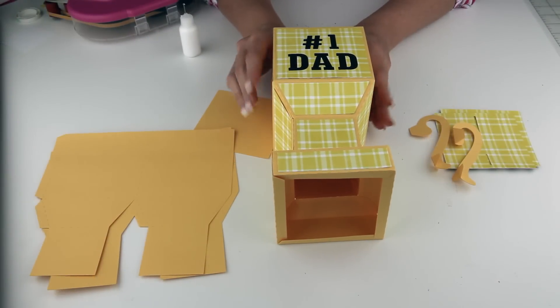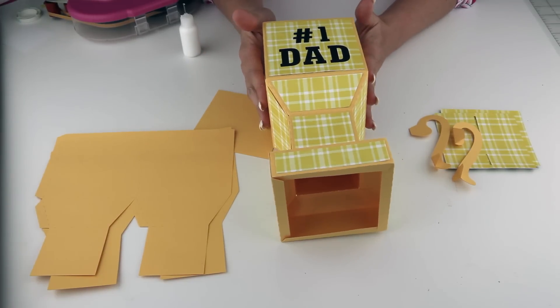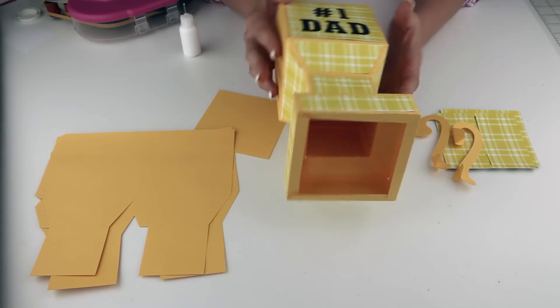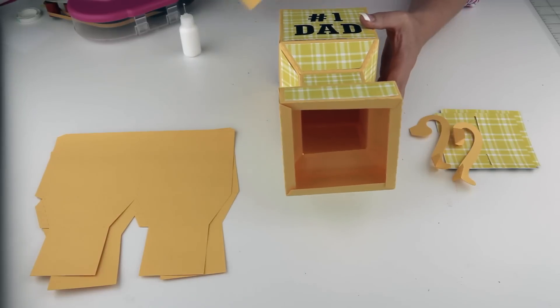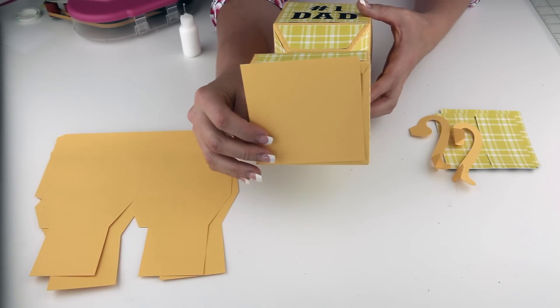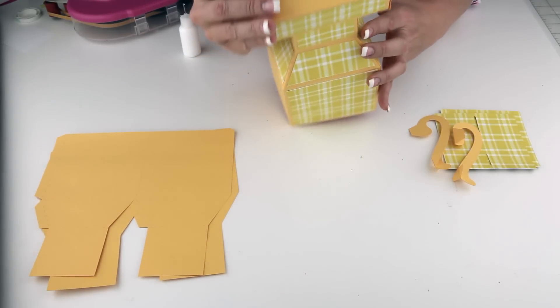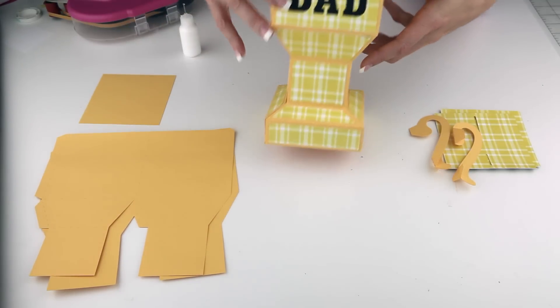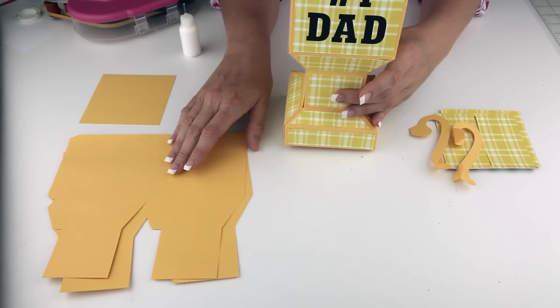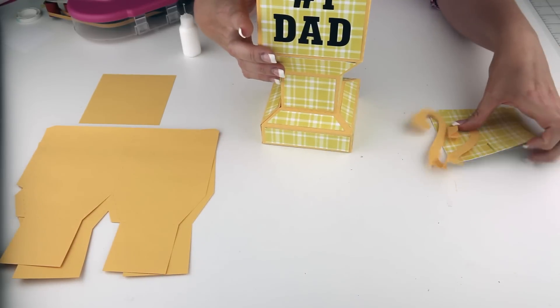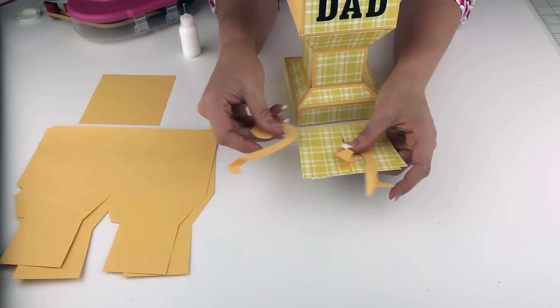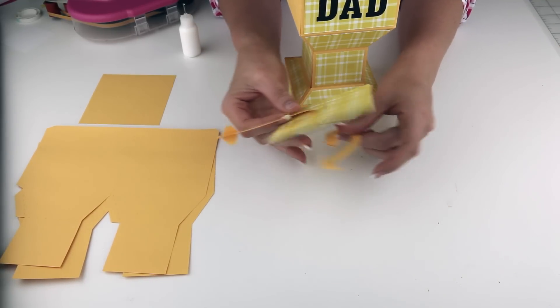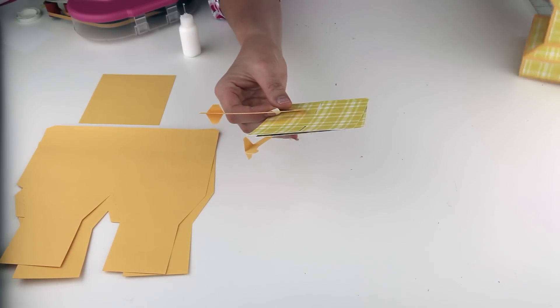So this is what your box should look like at this point. One piece I neglected to show you at the very beginning was the bottom square. Go ahead and cut that out and make sure that you adhere it to the bottom of the box. Now let's assemble first the handles and those two side panels. I am going to set our main box to the side for a minute.